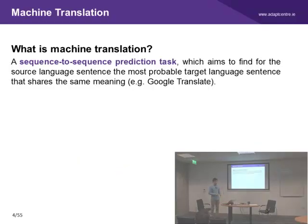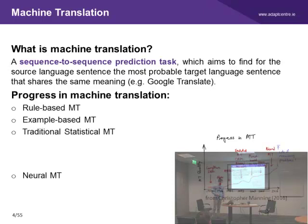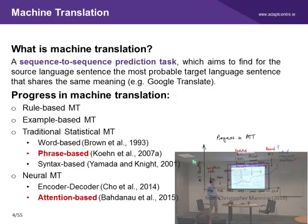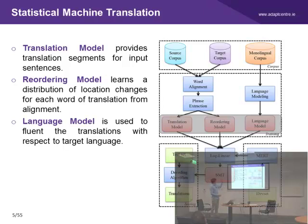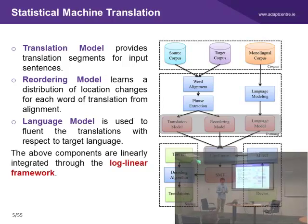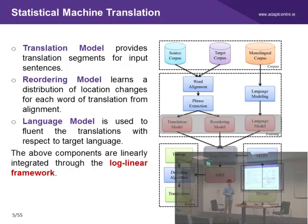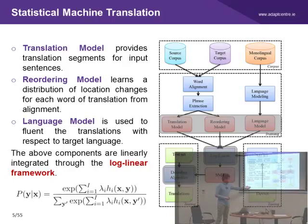The first question is: what is machine translation? Like Google Translate, it aims to find, for the source language sentence, the most appropriate target language sentence that shares the same meaning. Since 1954, machine translation has been developed in different stages. In our work, we will mainly focus on the widely-used phrase-based SMT and the state-of-the-art attention-based neural MT. In SMT, we build separate models to learn the language pairs, word reordering, and language smoothing. All models are linearly integrated into a log-linear framework, and during decoding, we select the output with the highest probability.